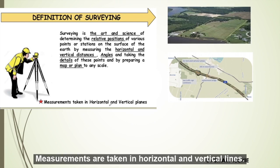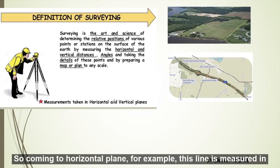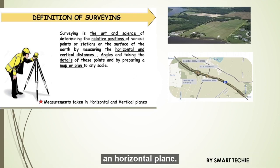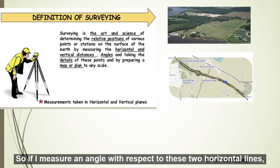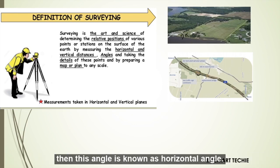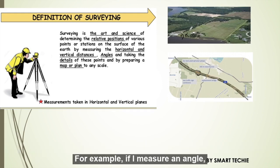Measurements are taken in horizontal and vertical planes, also to determine the three-dimensional relationship between different locations. For example, this line is measured in a horizontal plane — it is known as a horizontal measurement. If I measure an angle with respect to these two horizontal lines, then this angle is known as a horizontal angle.